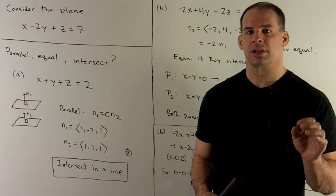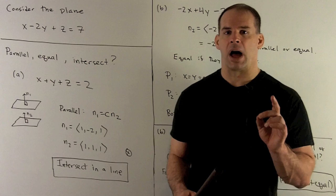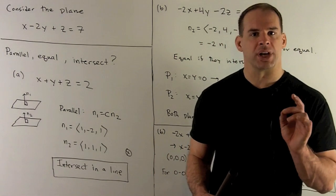Consider the plane x minus 2y plus z equals 7. For the following planes, will they be parallel, equal, or will they intersect in a line?